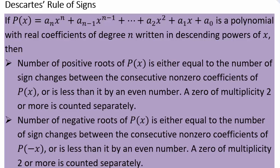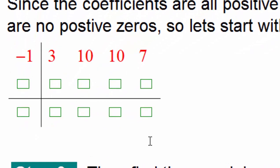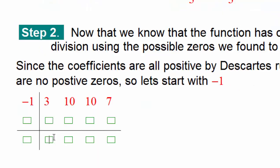Let's come back to our original example and see which of these potential rational zeros actually work. From Descartes' Rule of Signs, since there is no sign change in the polynomial, there are no positive real roots. So none of the positive rational zeros are going to work. We can start with negative 1. Write the coefficients 3, 10, 10, 7 from highest degree to lowest degree. If there are any missing terms, put zero as a placeholder. Pause the video here and do synthetic division on your own, then come back and check your answers.